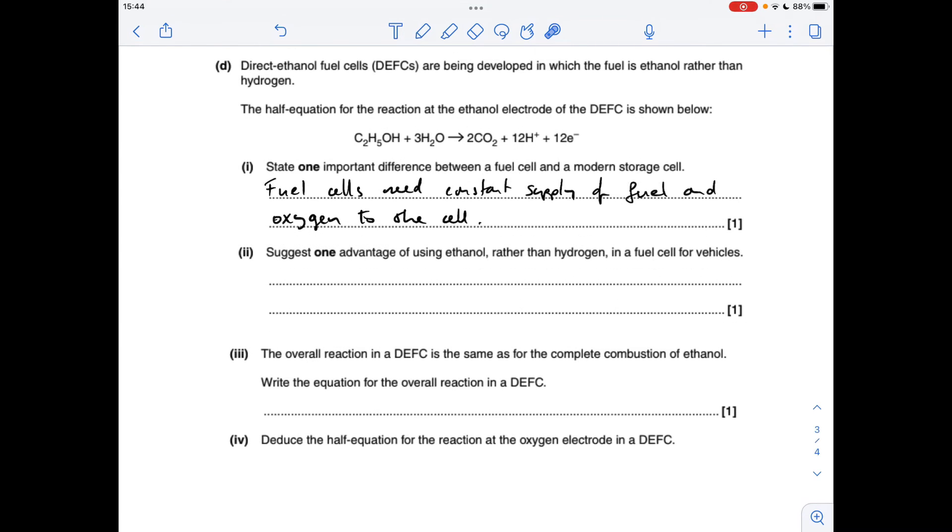Part D, now an important difference between a fuel cell and a modern storage cell. Well, fuel cells need a constant supply of fuel and oxygen going to the cell. Next part, an advantage of using ethanol rather than hydrogen in a fuel cell for vehicles.